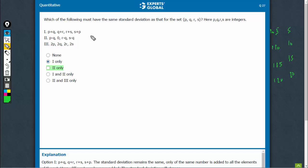Coming to this one, we had P, Q, R, S. To P, they have added Q here, so it becomes P plus Q. But see, to Q they have added an R. To R they have added an S. To S they have added a P. So they have added different numbers. So the standard deviation would change.